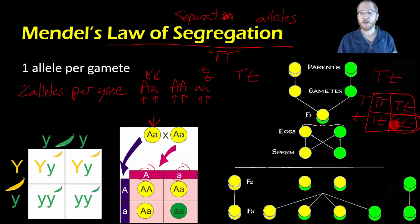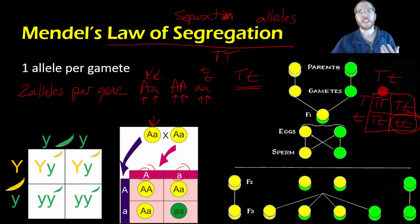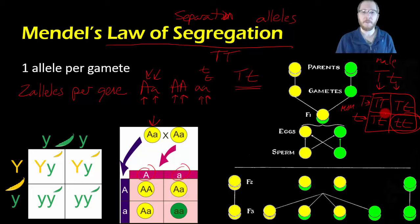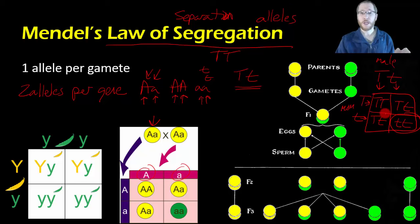Later on, a guy named Punnett came up with a square where, based upon what alleles the parent has, you can fill out which possible alleles the gametes can have. If you're big T, little t, you can either pass on a big T or a little t. This shows all the possible gamete combinations — sperm can have big T or little t, ovum can have big T or little t. We'll go into this more in class as we practice, but that's why Punnett squares are useful. You don't technically have to use one — there are mathematical ways of doing this — but we'll keep it simple.